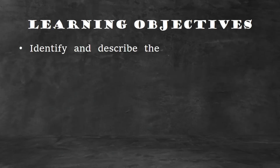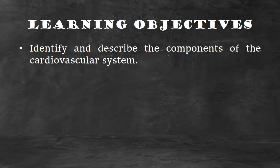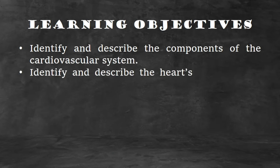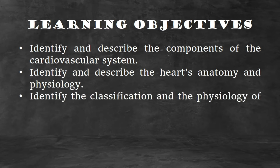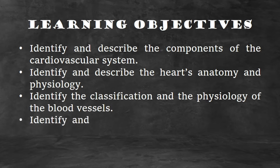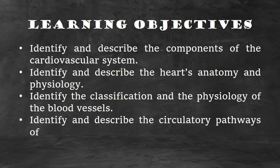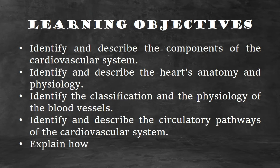The learning objectives for this lesson are: identify and describe the components of the cardiovascular system; identify and describe the heart's anatomy and physiology; identify the classification and physiology of the blood vessels; identify and describe the circulatory pathways of the cardiovascular system; and explain how the heart beats.